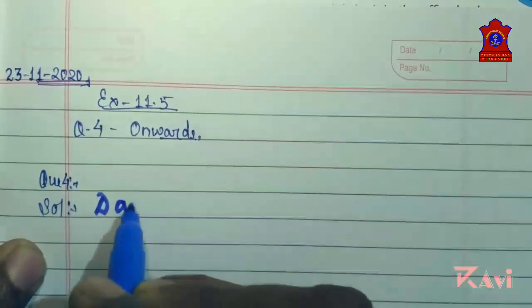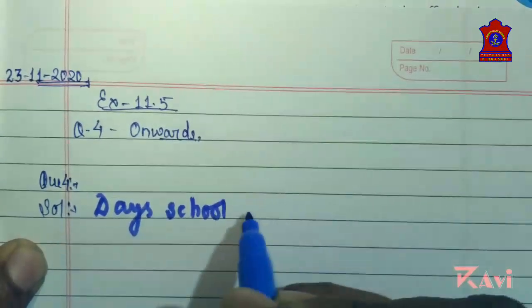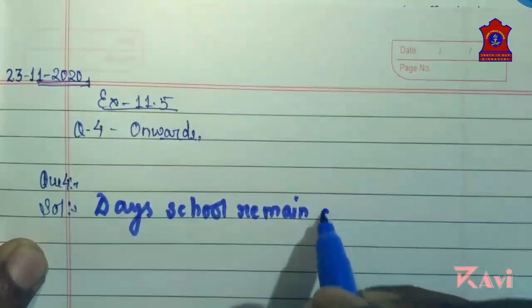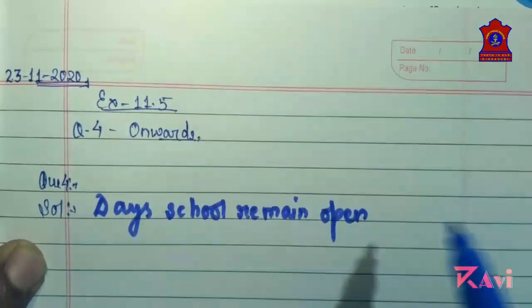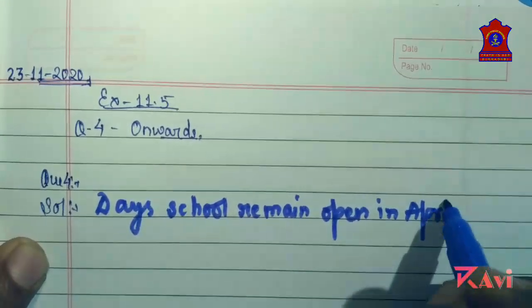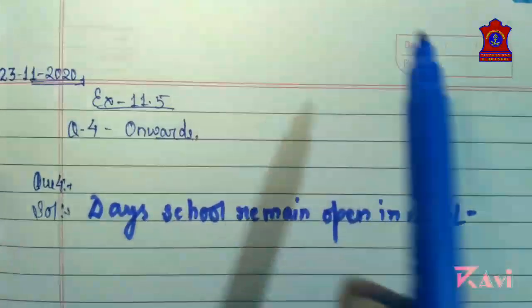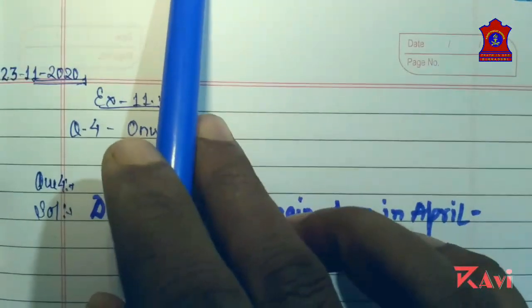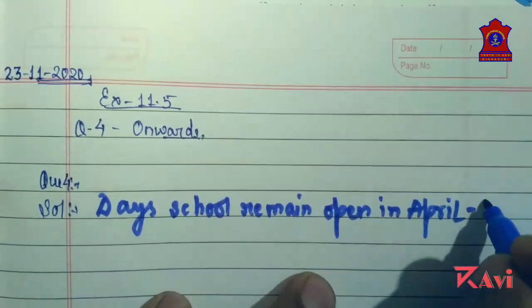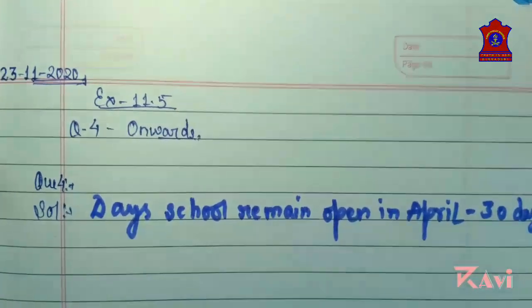Days school remain open in April. The school was open on 1st April. How many days are there in April? 30 days. So write 30 days.